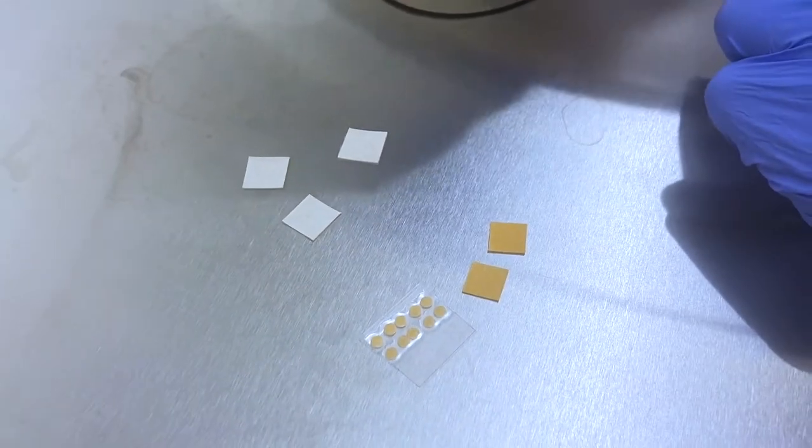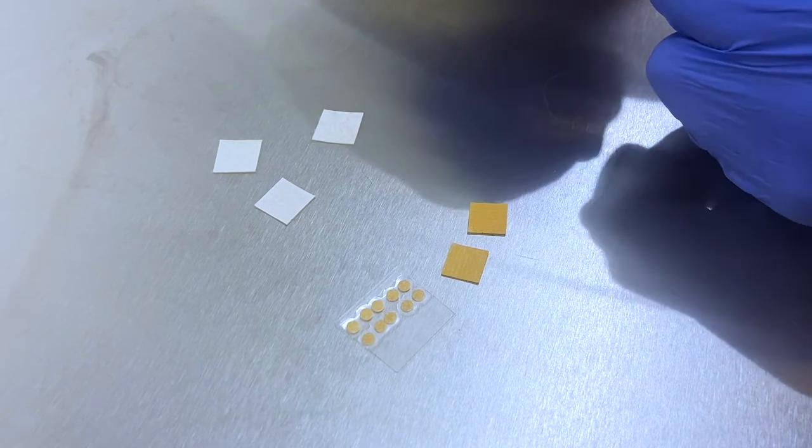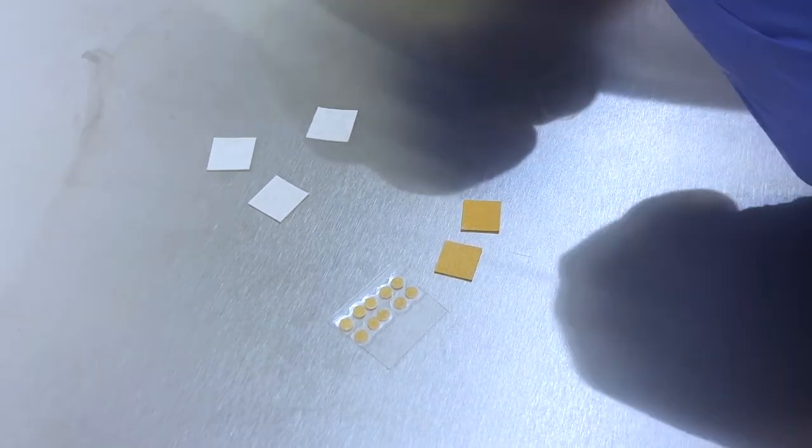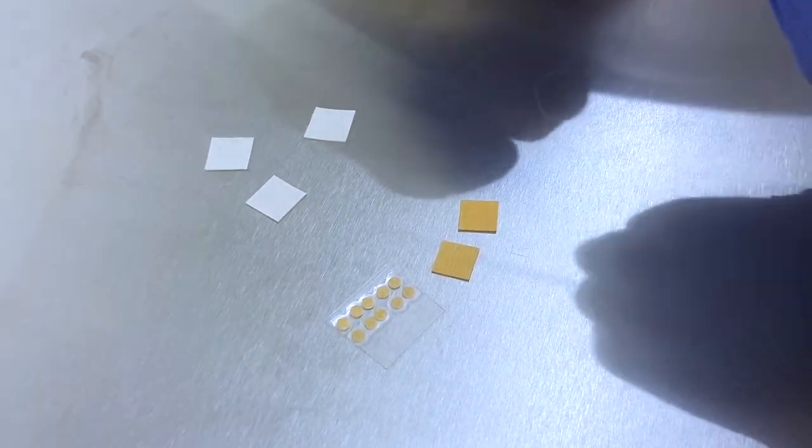Each of the sensor types has a top and a bottom. The top side is a hydrophilic layer that interacts with the media. The bottom side is an adhesive that's silicone-based, it's bio-friendly, and it sticks to the culture vessel.